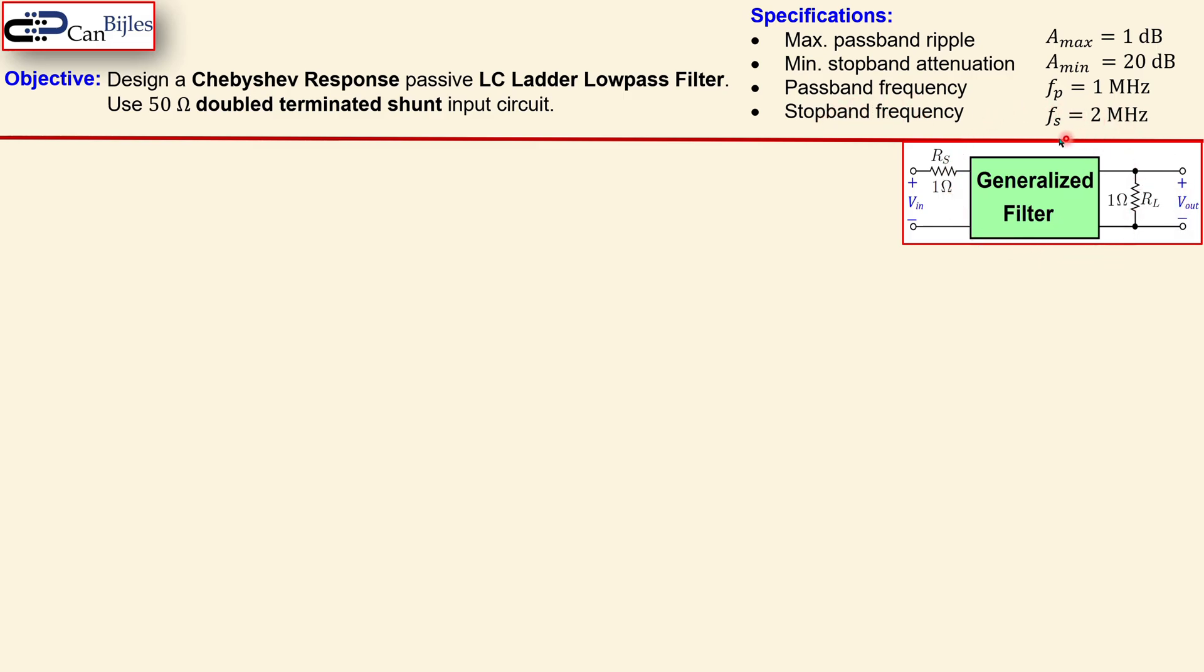And this is again this generalized filter circuit with the source and the load unity value of 1 ohm. So let's look at the solutions. Step one is calculation of the filter order as we did in the previous videos with the Butterworth response.